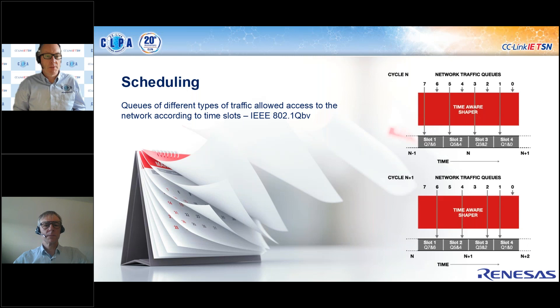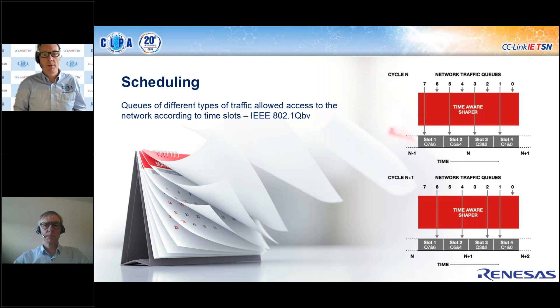The second item to consider is scheduling, handled by 802.1Qbv. This standard applies to how traffic is allowed to access the network. You may have different levels of traffic priority — for example, a video camera sending video frames over the network while simultaneously safety systems need to respond to an emergency stop. Qbv allows you to prioritize different kinds of traffic and ensure they don't interfere with each other, providing the second part of the story for determinism.